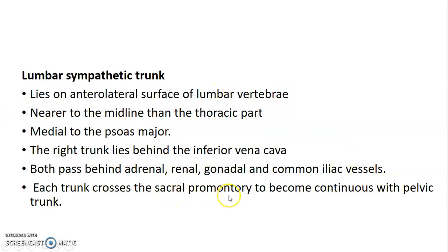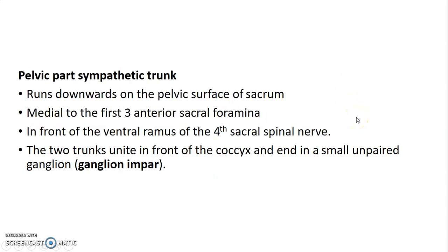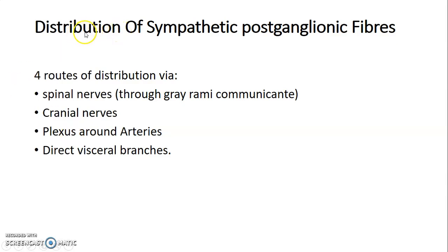The pelvic trunk runs downward on the pelvic surface of the sacrum, medial to the first three anterior sacral foramina, in front of the ventral ramus of the fourth sacral spinal nerve. The two pelvic trunks unite and end in a small unpaired ganglion called the ganglion impar. The sympathetic postganglionic fibers can be distributed following the spinal nerves through the gray rami communicantes, following cranial nerves or plexuses around arteries, or directly forming visceral branches to the organs. The next topic will discuss the pre-vertebral autonomic plexus.